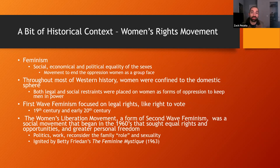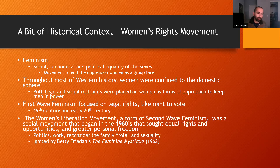A bit of historical context: this film was released around 1964, and I want to give context for the women's rights movement during that time. Feminism is the social, economic, and political equality of the sexes — a movement to end the oppression of women as a group. Throughout most of western history, women were confined to the domestic sphere; both legal and social restraints were placed on women to keep men in power. First wave feminism focused on legal rights like the right to vote, mostly in the 19th century and early 20th century.